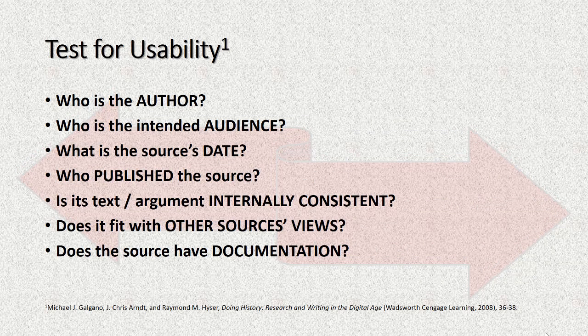So, how do we test for source usability? Examine these criteria drawn from Galgano, Arndt, and Heiser, Doing History, 2008, pages 36 to 38. Ask: who is the author? Look for a biography on the publication or near it — start with the book jacket or journal article. Some journals don't publish an author bio with the article, but do so in a separate section of the issue. If you get an article from a database and it does not have the author's bio, browse that issue of the journal too. You can do this online.